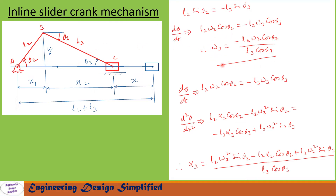Differentiating once more to find alpha3: differentiating L2·omega2·cos theta2 − L3·omega3·cos theta3 gives L2·alpha2·cos theta2 − L2·omega2²·sin theta2 = −L3·alpha3·cos theta3 + L3·omega3²·sin theta3. Rearranging gives alpha3 = (L2·omega2²·sin theta2 − L2·alpha2·cos theta2 + L3·omega3²·sin theta3) / (L3·cos theta3). This is the equation for angular acceleration of the coupler link.